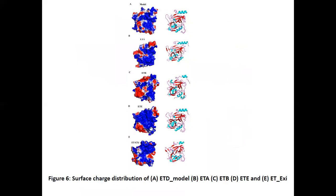These are the surface charge distributions of these enzymes. You can see that ETD, the enzyme we are studying, is highly positively charged with a little neutral and negatively charged regions. ETA, the exfoliative toxin A, is mostly positively charged with a little negatively charged region. ETB is partially positive and partially negative.